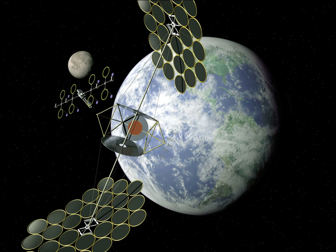Space-based solar power is the concept of collecting solar power in outer space and distributing it to Earth. Potential advantages include a higher collection rate and a longer collection period due to the lack of a diffusing atmosphere, and the possibility of placing a solar collector in an orbiting location where there is no night.